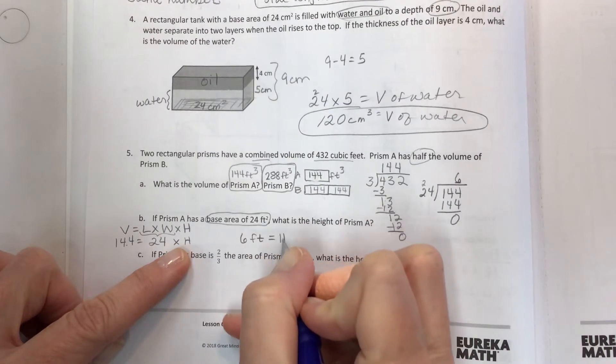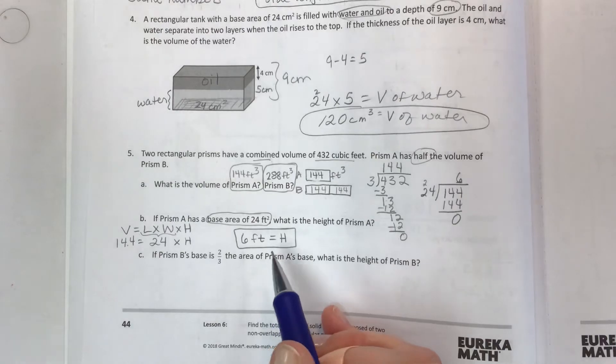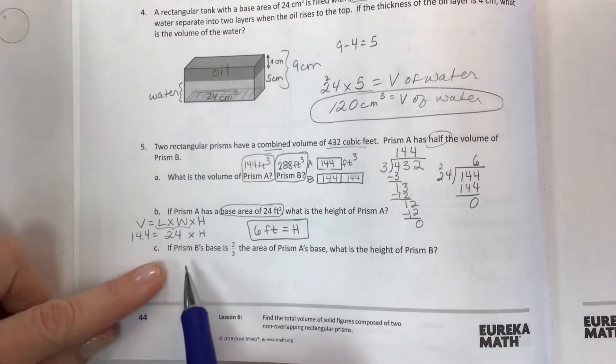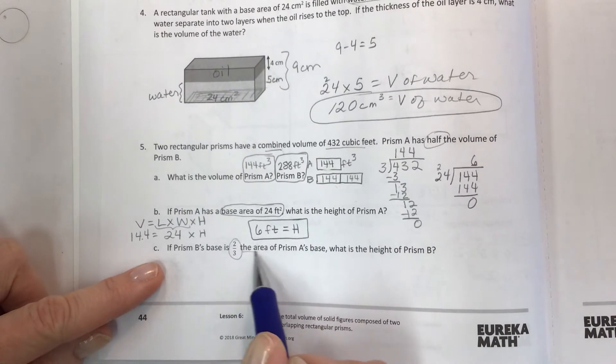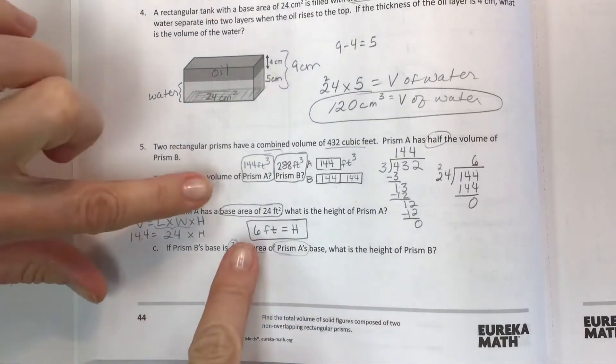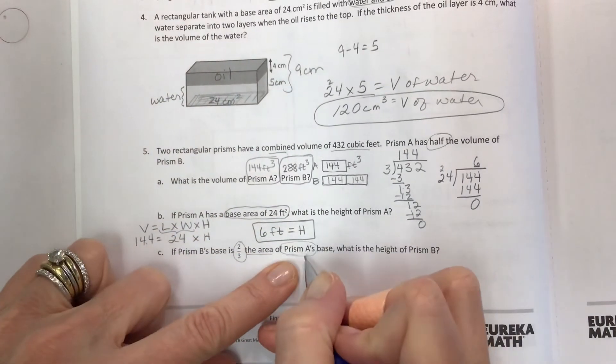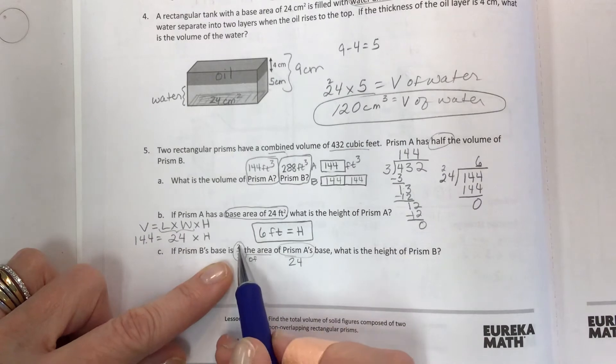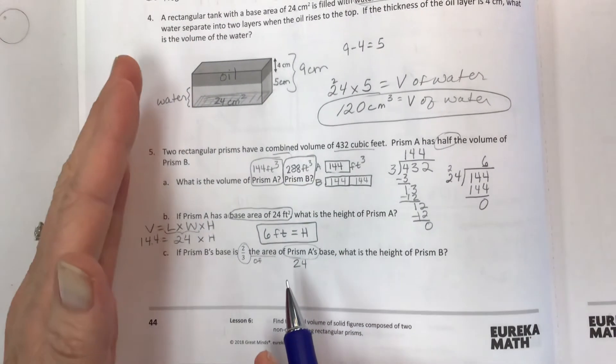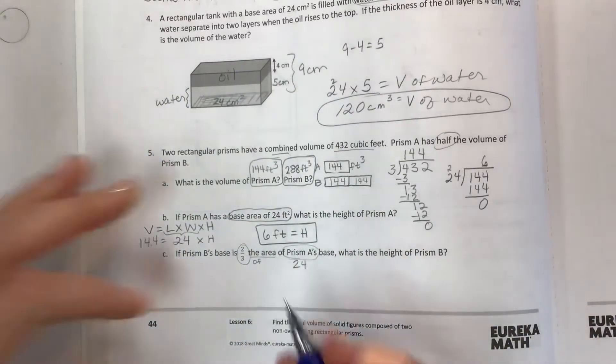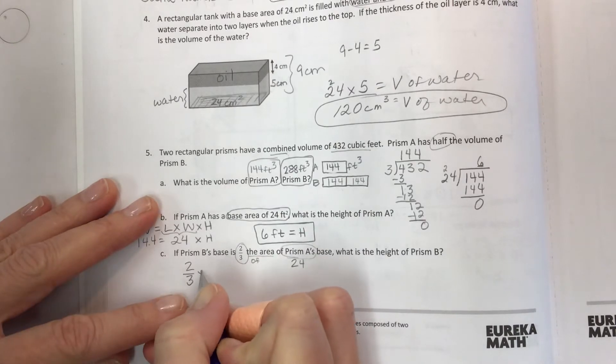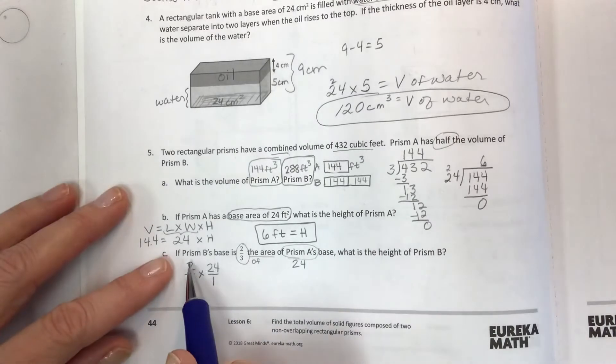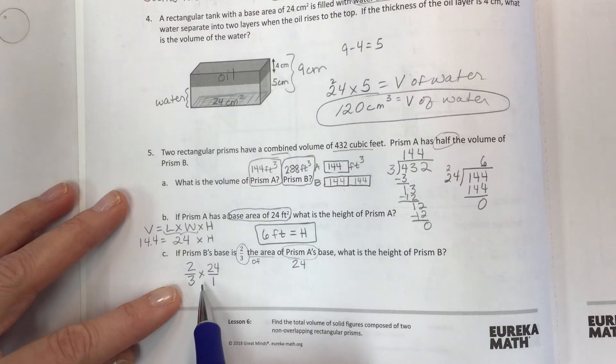Now part C. If prism B's base is two-thirds the area of prism A's base, we do know that the base area of prism A is 24. The area of prism A's base is 24 and we just need two-thirds of that. Remember if they put two-thirds the area that's like putting the fraction right next to the parenthesis, and when you have the number right next to the parenthesis you multiply. So this is really two-thirds of 24 in order to find the base area.